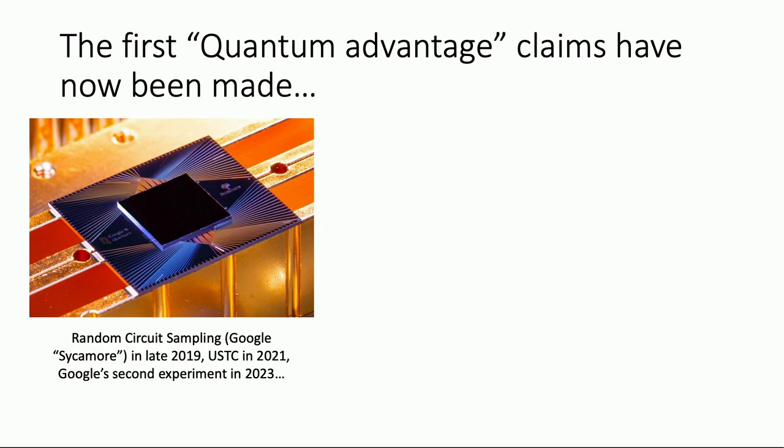We're living in a really exciting time where it's at least feasible that near-term quantum experiments being built in laboratories around the world are in principle capable of solving problems that can't be solved with a classical computer in a reasonable amount of time. We've seen these claims several times — first, very famously by Google in late 2019, who implemented their random quantum circuit sampling proposal on 53 superconducting qubits. More recently, a random circuit sampling experiment by USTC, and even very recently, in the last few months, a second experiment by Google which fixed some loopholes in their first experiment.